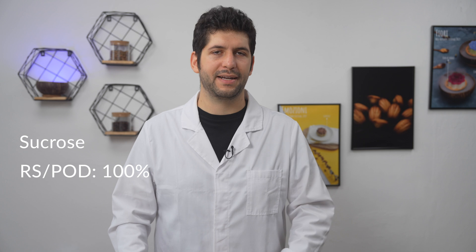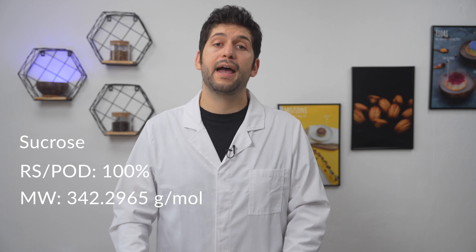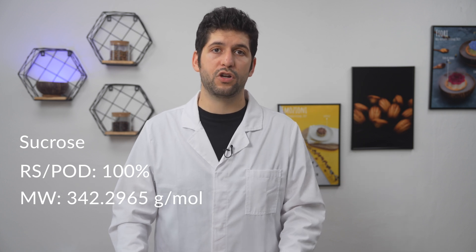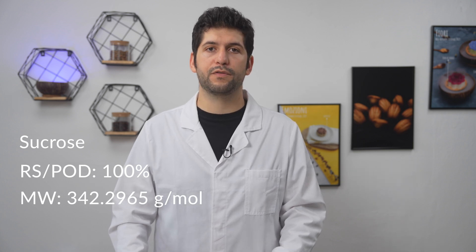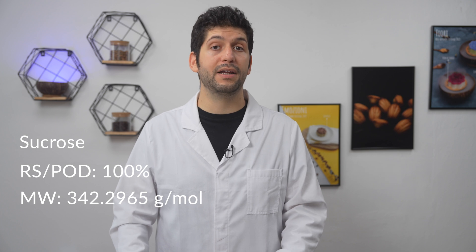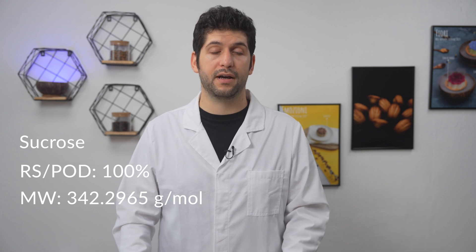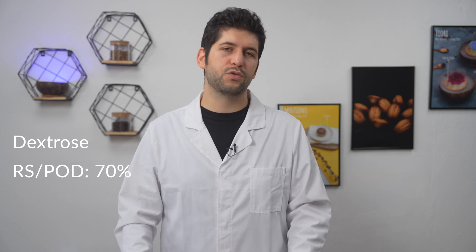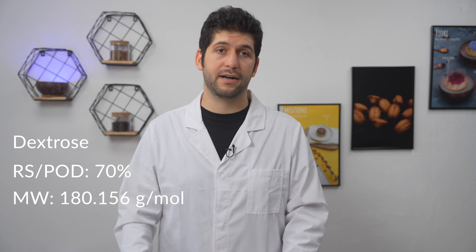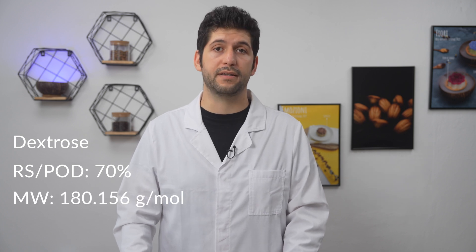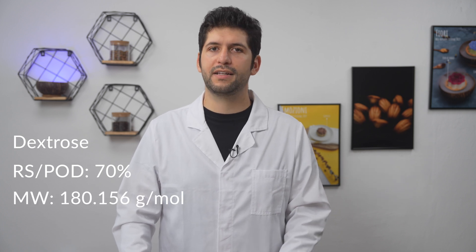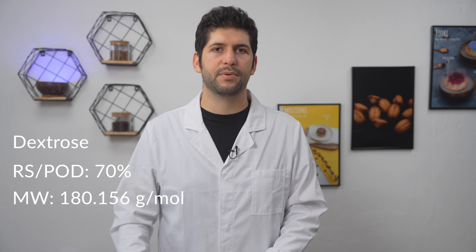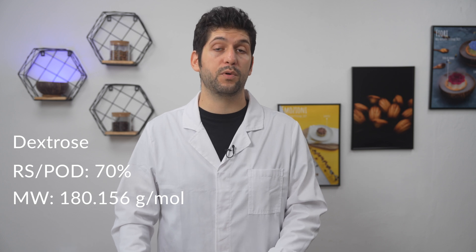Sucrose is the sugar we all know and used basically everywhere, and it's usually the main sugar in gelato because of its pleasant sweet flavor and the ability of increasing other flavors. Dextrose is a sugar that is less sweet than sucrose but with a higher anti-freeze capacity. As we said in the previous video, this helped us obtaining a gelato with smaller ice crystals during the freezing phase.